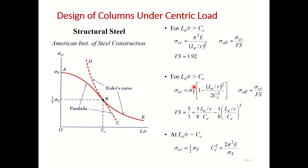We typically know the yield strength and modulus of elasticity of the material, so we can find sigma critical and sigma allowable directly. This is how practical column design differs from the analytical Euler approach: the Euler curve is used for long columns, while empirical relations are used for short or intermediate columns.